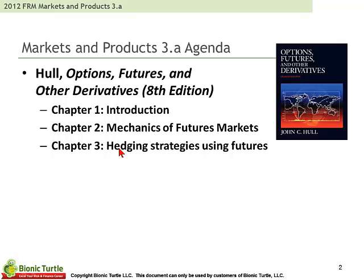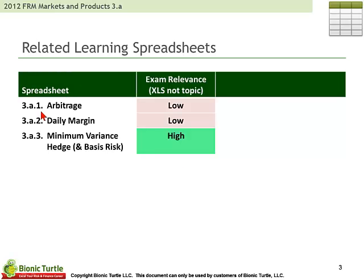Let's look at chapters one, two, and three: the introduction, mechanics of futures market, and hedging strategies using futures. Basically, we're looking at futures contracts. The associated spreadsheets are 3A1 arbitrage, where we illustrate the arbitrage idea — a lot of our derivative pricing is based on a no-arbitrage idea. 3A2 illustrates the daily margin concept, low in terms of exam relevance, for your reference. And finally, 3A3, quite the opposite, is a high-relevance spreadsheet illustrating the minimum variance hedge.